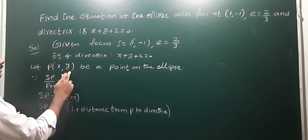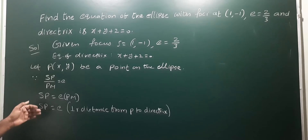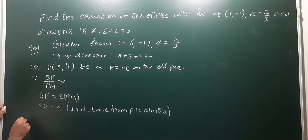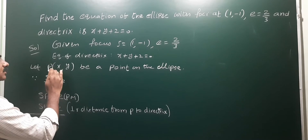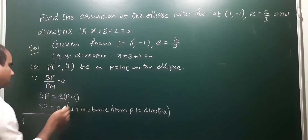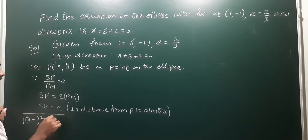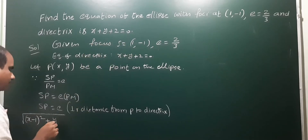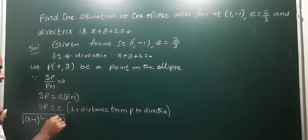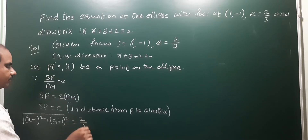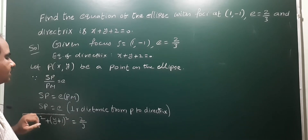Using the distance formula, SP = √[(x - 1)² + (y - (-1))²] = √[(x - 1)² + (y + 1)²]. This equals e, which is 2/3, multiplied by the perpendicular distance from P to the directrix.